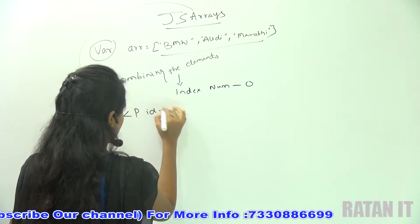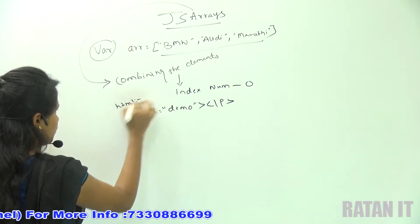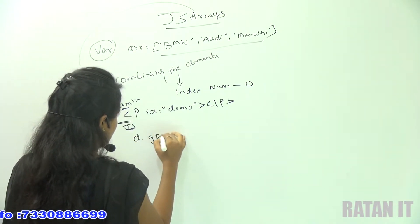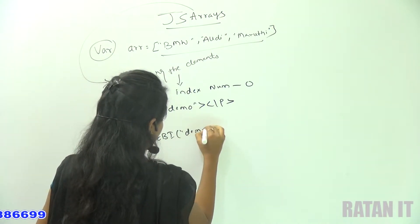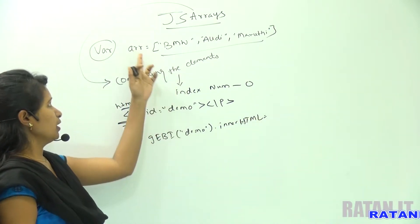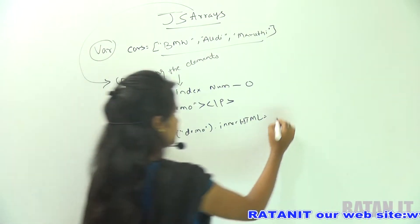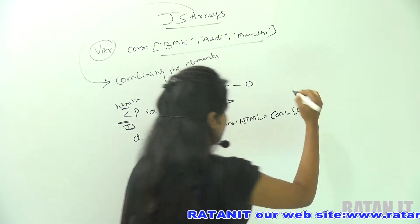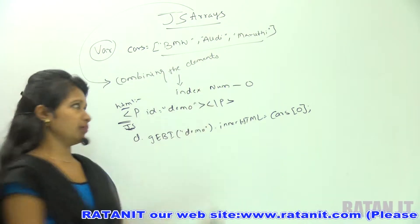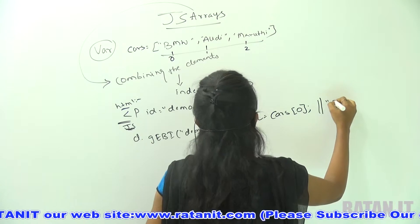In a paragraph with id equal to demo, I am going to display these elements in HTML. My JavaScript will be: document.getElementById('demo').innerHTML equal to cars[0]. Index 0 will be BMW, index 1 will be Audi, index 2 will be Maruti. So cars[0] produces the output BMW.